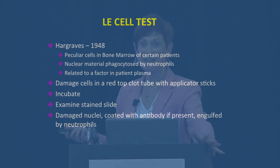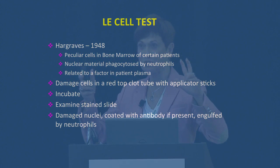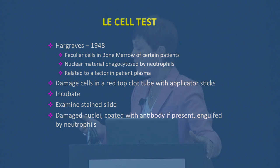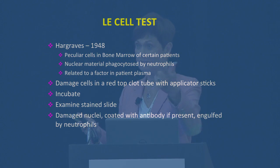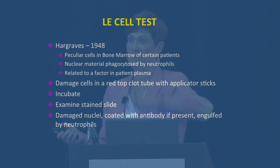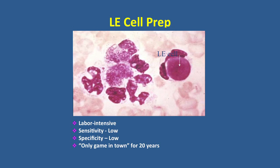The original ANA test was called the LE cell or lupus erythematosus test. It started at Mayo Clinic where they were looking at bone marrows and began to see that in patients diagnosed with lupus, they found a very peculiar cell in their bone marrow related to a factor in patient plasma — which at that time they didn't even know was antibody. The test then evolved into doing it on peripheral blood. You took a clot tube, damaged the cells with applicator sticks, incubated them, and the damaged nuclei would be phagocytized by the antibody if the patient had it. Sensitivity was about 50%, specificity about 50%, but it was the only game in town for a very long time.